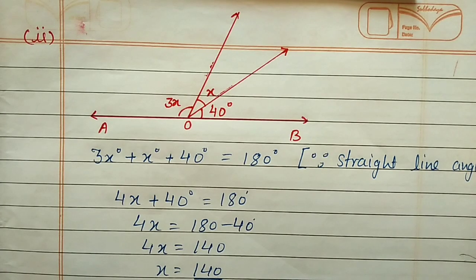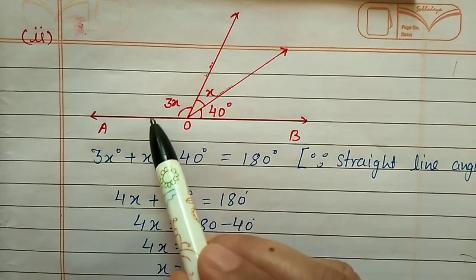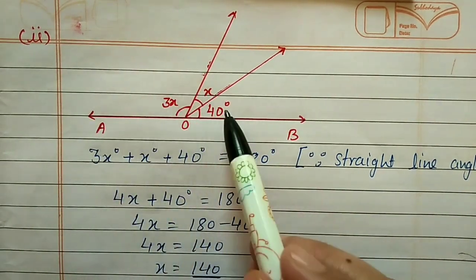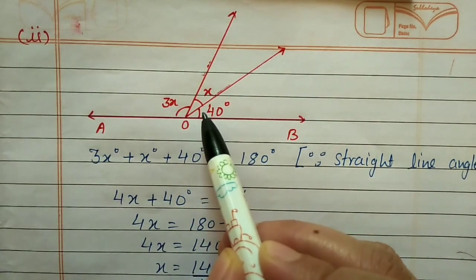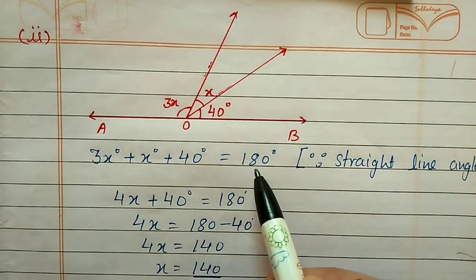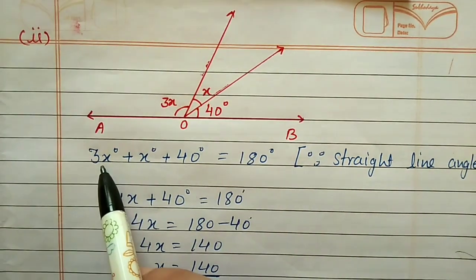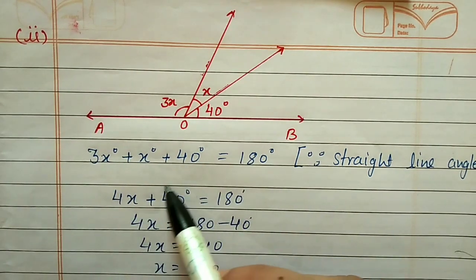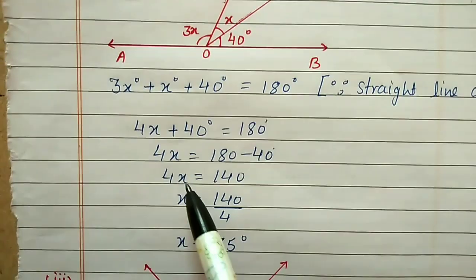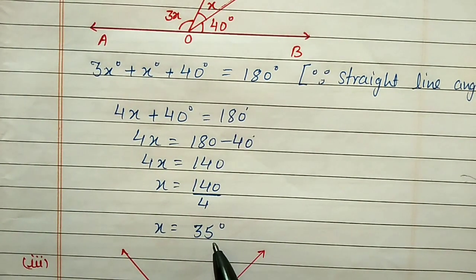Second part: the figure has three angles on a straight line — 3x, x, and 40 degrees. The sum of straight-line angles is 180 degrees, so 3x + x + 40 = 180. Then 4x = 180 − 40 = 140, and shifting 4 to the other side, x = 35 degrees.